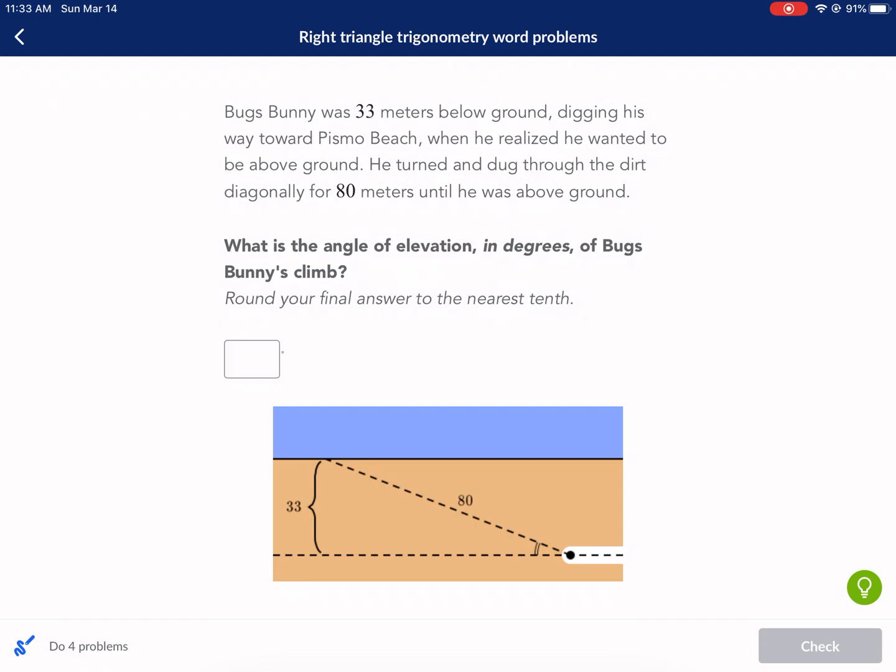Bugs Bunny, throwback here, was 33 meters below ground, digging his way towards Pismo Beach, when he realized he wanted to be above ground. He turned and dug through the dirt diagonally for 80 meters until he was above ground. What is the angle of elevation in degrees of Bugs Bunny's climb? Round your answer to the nearest tenth.